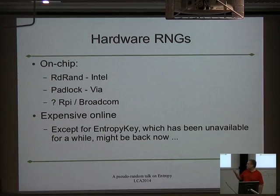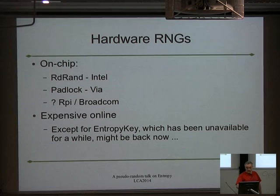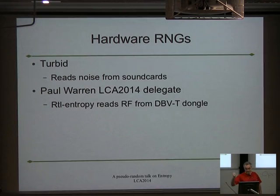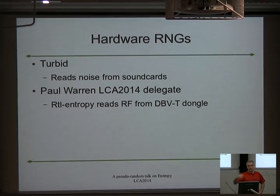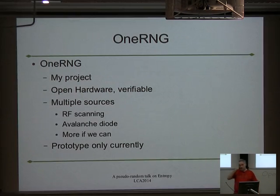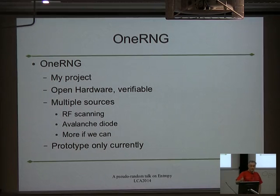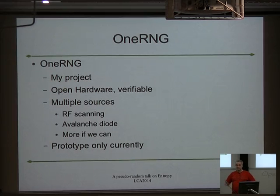Hardware random number generators: there's one on Intel, one on VIA, and the Raspberry Pi has one — though Broadcom is so closed you have no idea what it does. If you want to buy a hardware random generator, there's been a good one called the Entropy Key from the UK, though the company has had availability problems. Someone called Paul Warren has been pulling RF noise from TV cards for very high quality, fast randomness. We're building one in Dunedin — two different noise sources, you can pull the original data off it, get it after it's been hashed through AES, rewrite the firmware yourself. Because if you can't do that, you can't trust it.